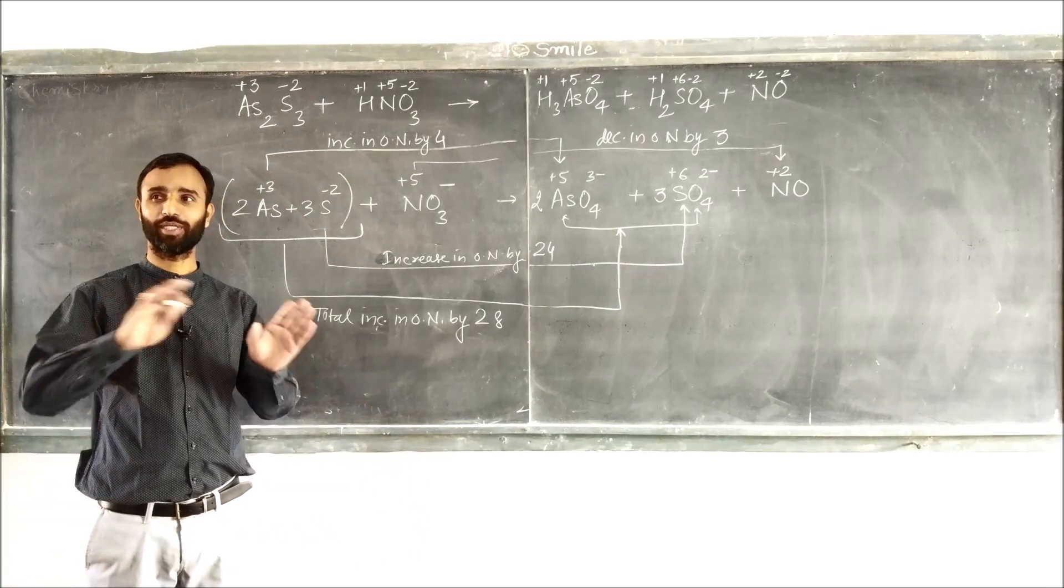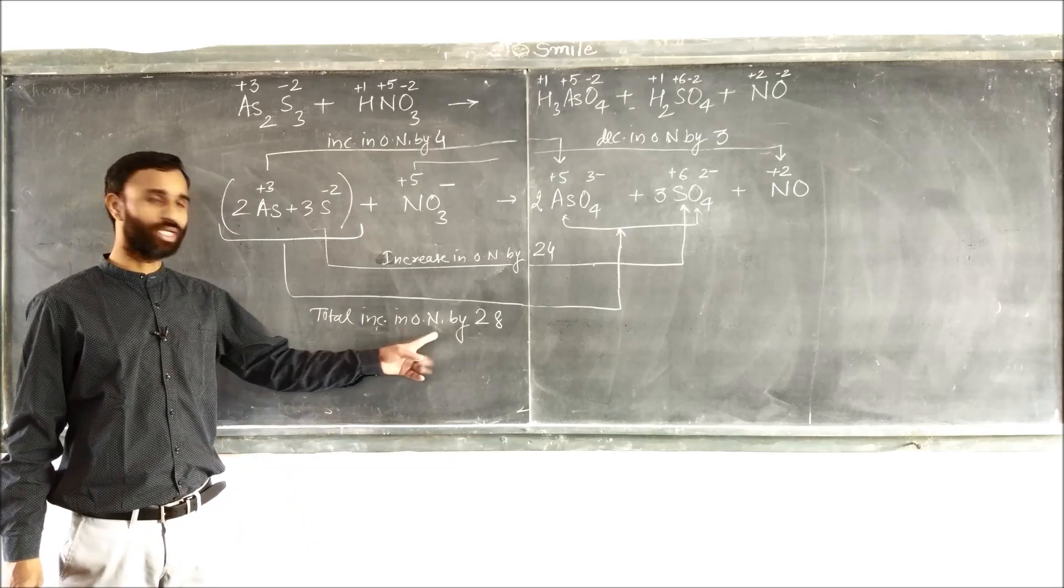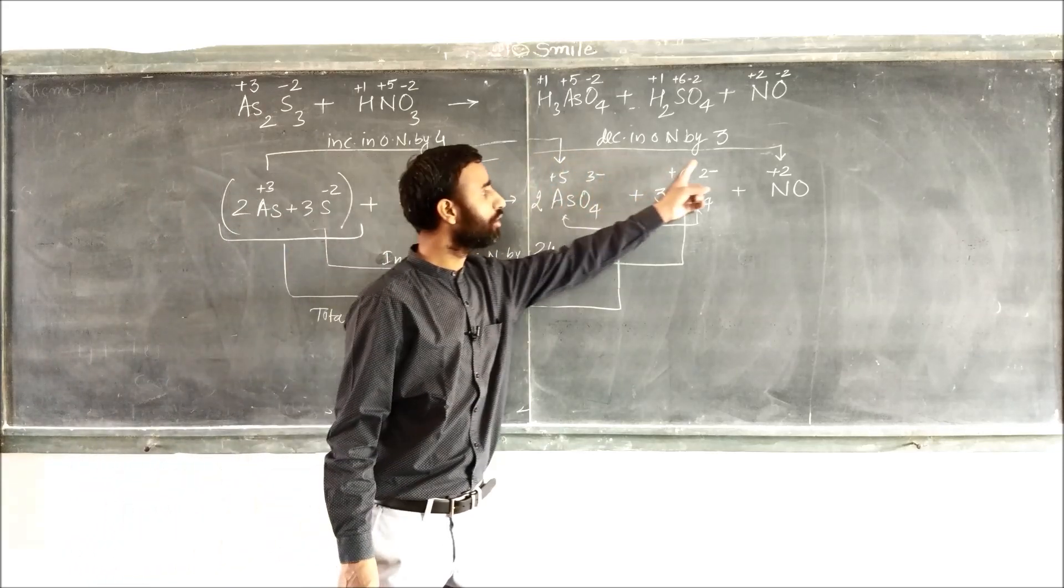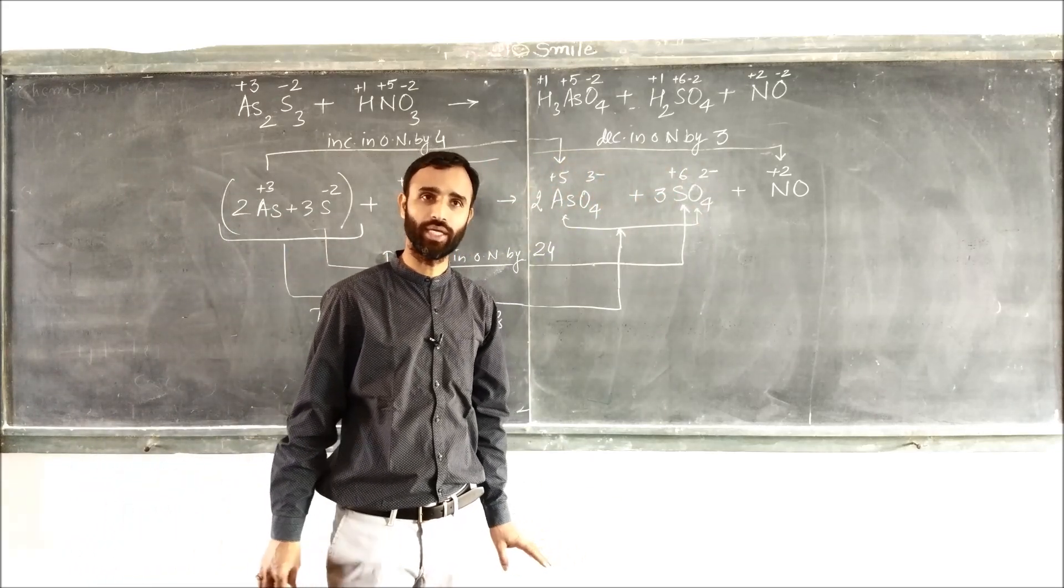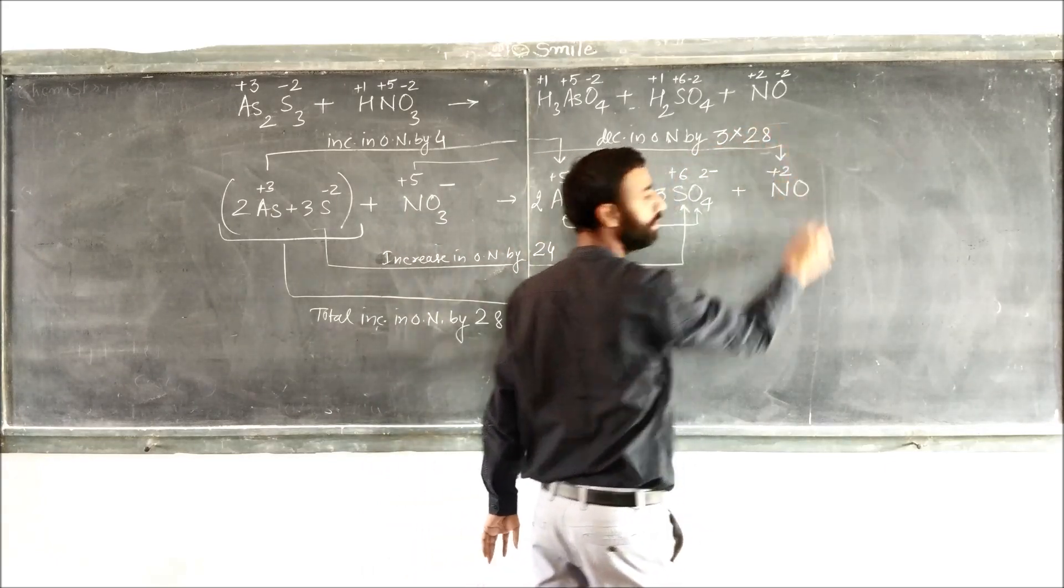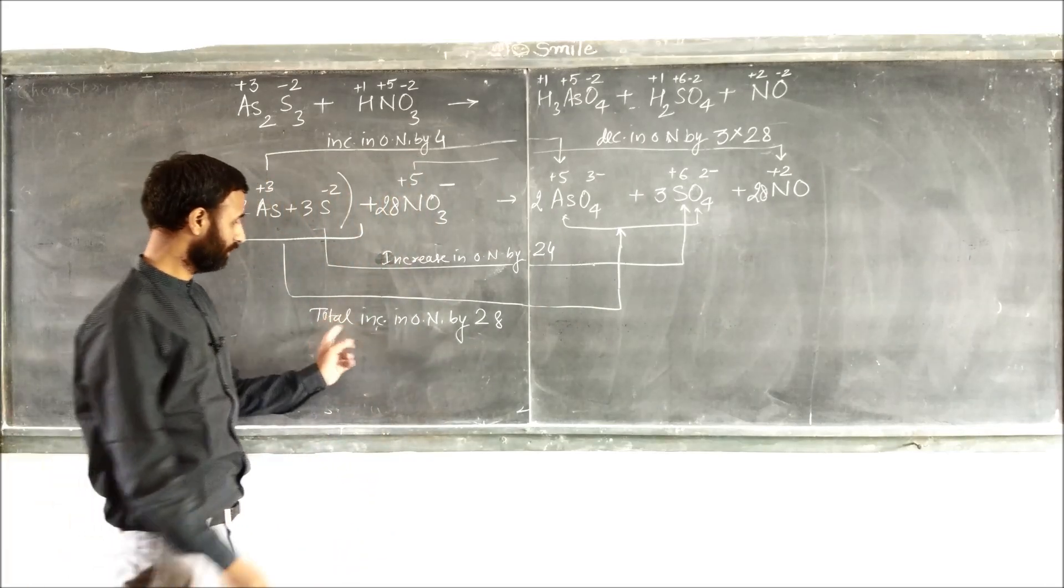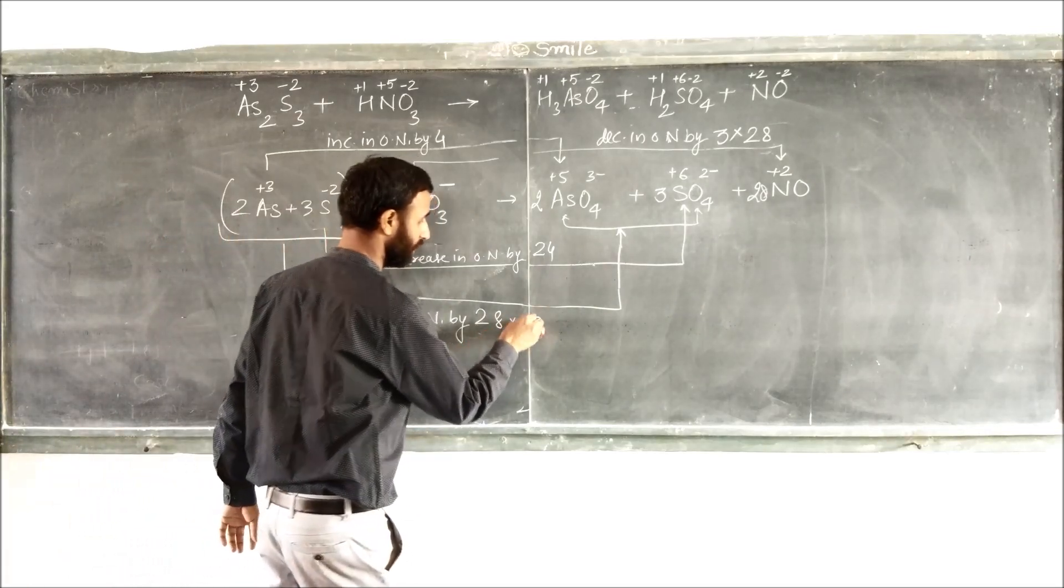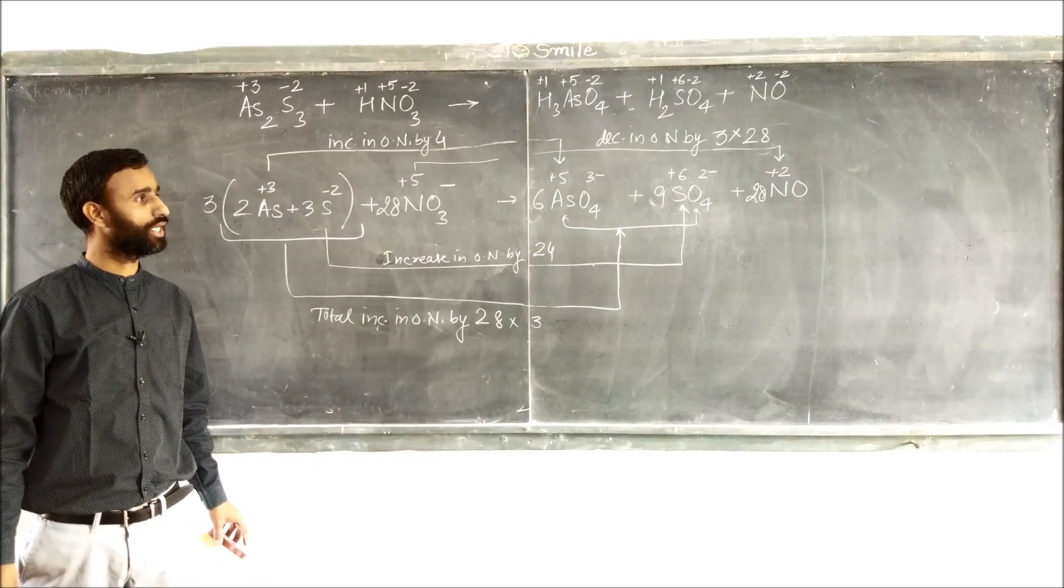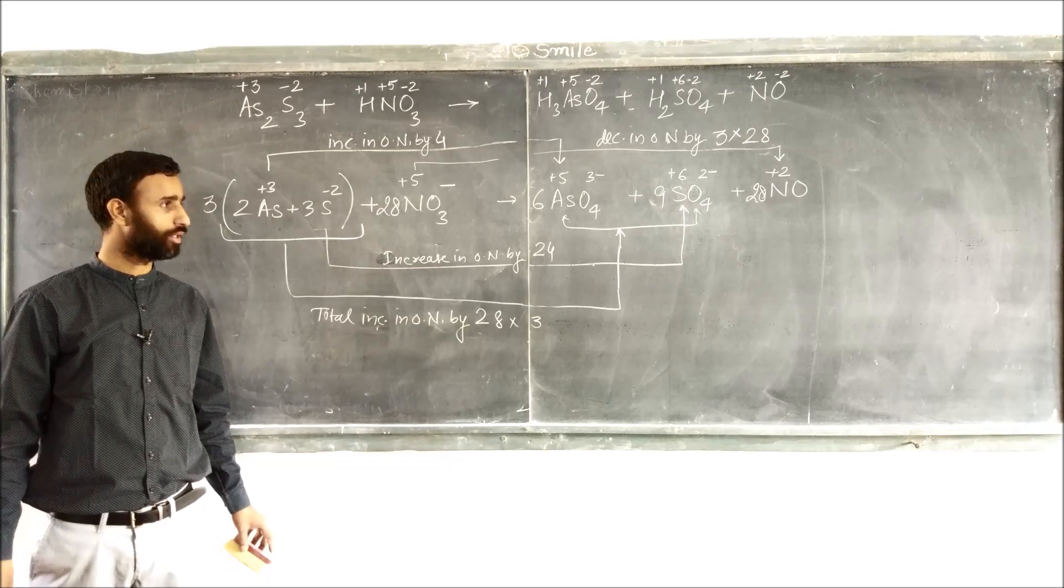Multiply by the minimum number to balance both. Total increase in oxidation number by 28, total decrease by 3. So this equation should be multiplied by 3 and the other equation by 28. It becomes 6 H3AsO4 minus, 9 H2SO4 minus.